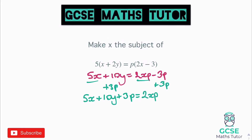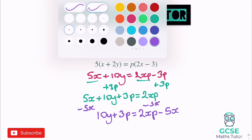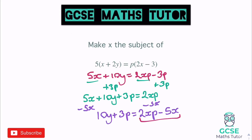Now let's get the x's next to each other, so we need to minus this positive 5x to the other side. So minus 5x, and we have 10y plus 3p equals 2xp minus 5x. We can finish this off now — we just need to factorise this right-hand side by x. So we have 10y plus 3p equals x brackets 2p minus 5.